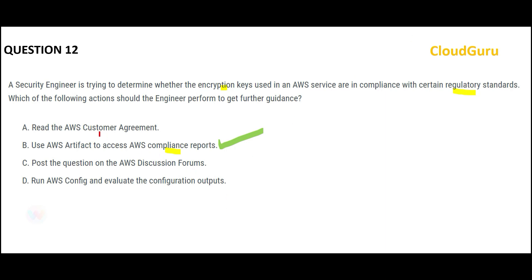If you read the customer agreement option, how on earth are you doing auto compliance? You are not — you are just reading it. So that option looks very silly. Option C is even sillier because they are saying you post the question on discussion forums — how would that help you with compliance?